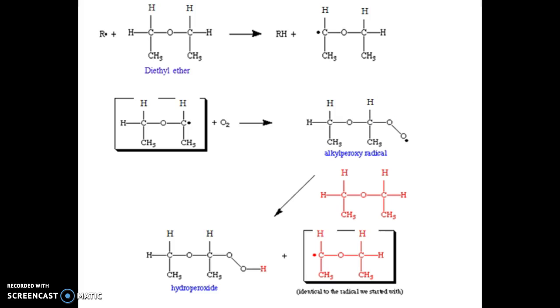This example shows that R with a dot represents a genuine alkyl radical. In the case of diethyl ether, the free radical abstracts a hydrogen atom from a carbon next to the ether oxygen atom.